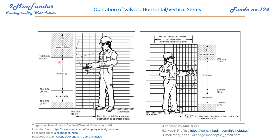Similarly, for valves with horizontal stems, the preferred elevation range is from 610mm up to 1800mm. So 610 to 1800mm is the preferable elevation of the stem for vertical valves with horizontal stems. Our main purpose is to provide ease to the operator while operating the valves.